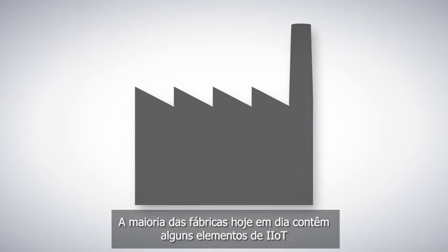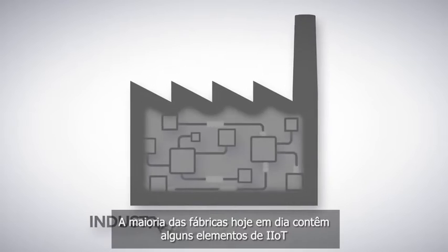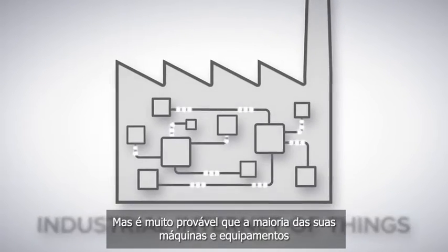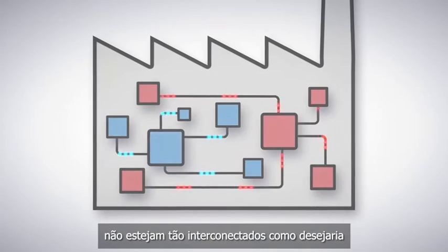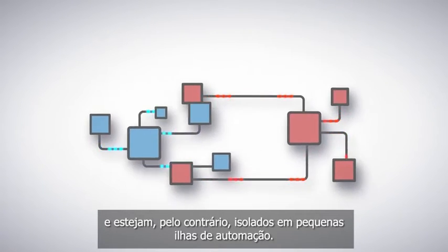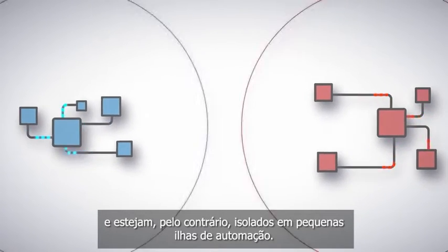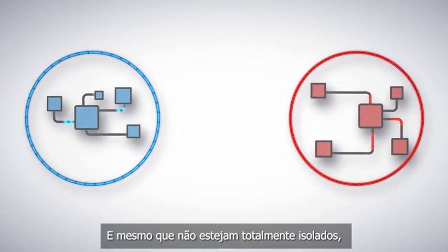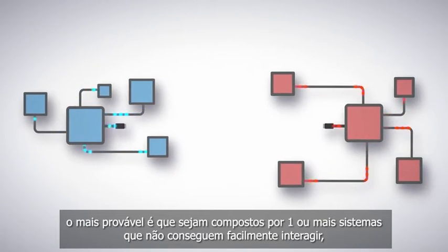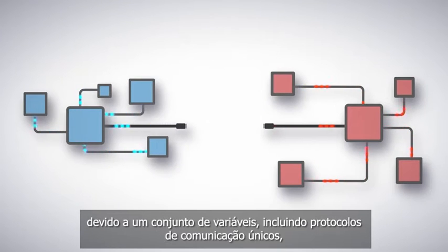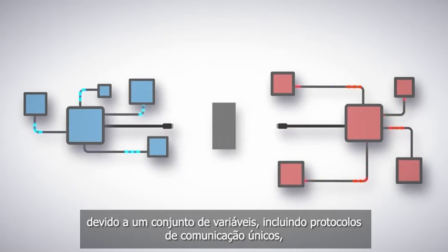Most factories today contain some elements of IIoT, but it's more than likely that the majority of your machines and equipment are not as interconnected as you'd like, and are instead isolated in little automation islands. And even if they're not entirely isolated, they are likely composed of one or more systems that can't easily interact due to a number of variables, including unique communication protocols.